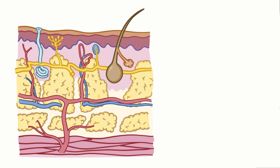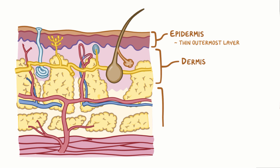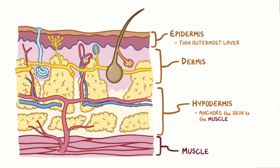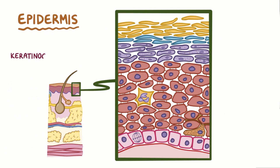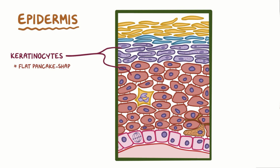The skin is divided into three layers. The epidermis forms the thin, outermost layer of the skin. Underneath is the thicker dermis layer, and finally there's the hypodermis that anchors the skin to the underlying muscle. The epidermis itself is made of multiple layers of developing keratinocytes, which are flat, pancake-shaped cells named for the keratin protein that they're filled with.